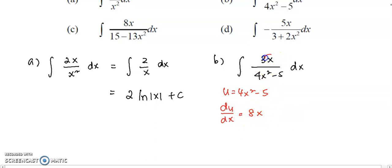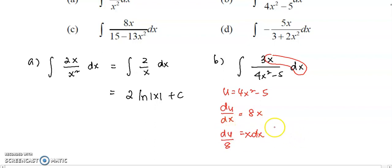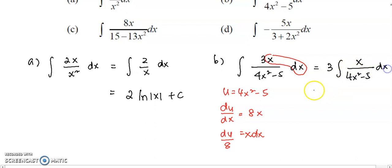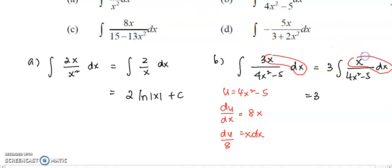So you can see that the x dx here can be substituted as du over 8 later on. x dx can be written as du over 8. So in my question, I can take out the 3 first. When you take out the 3, it will be more obvious when you come to substitution. The 3 is just a coefficient. And this x dx, later on, I'm going to write it down as du over 8.